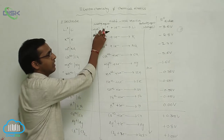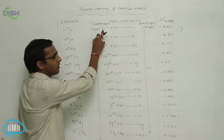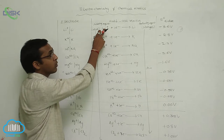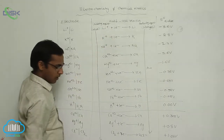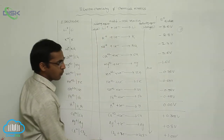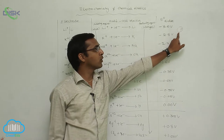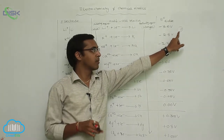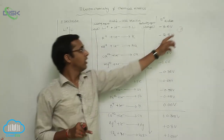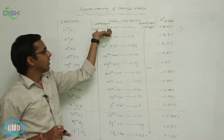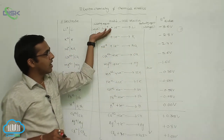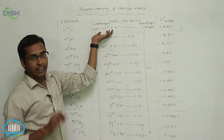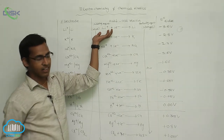The electronegative character of lithium is very less, but its electropositive character is more. Whereas for fluorine, the electropositive character is less but the electronegative character is more. Metals above hydrogen act as cations — they produce cations.